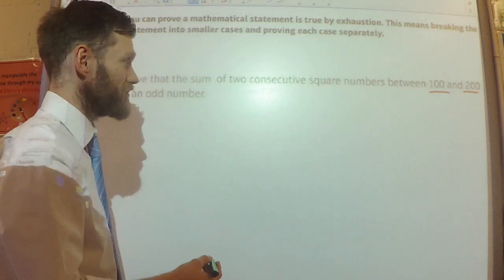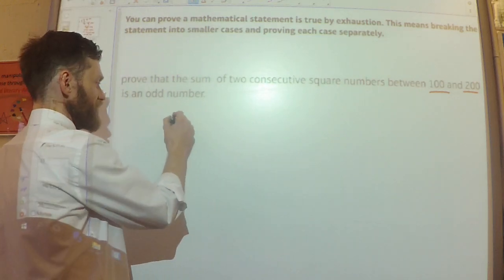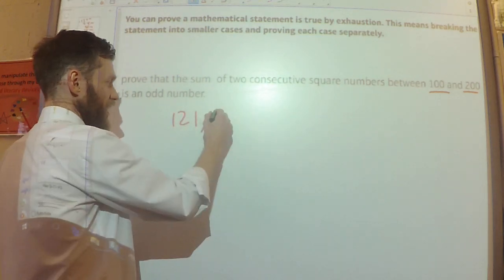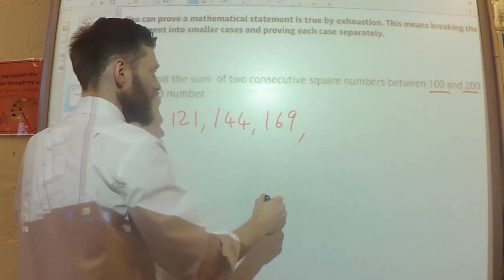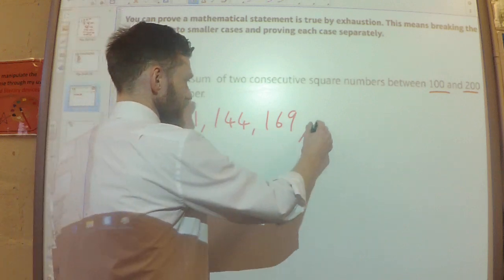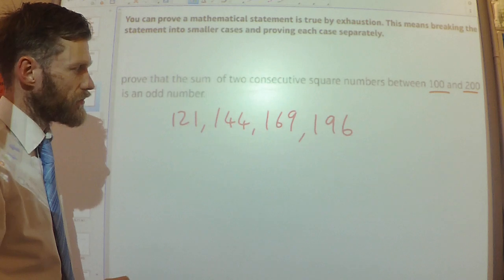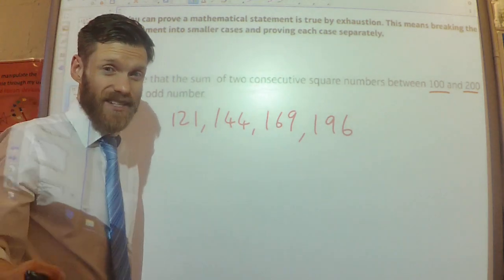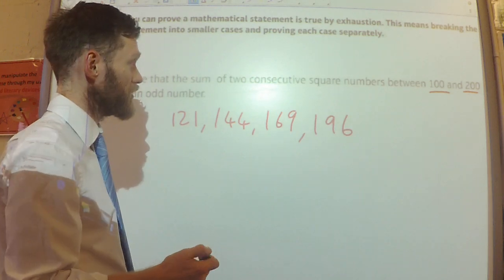In fact, let's just write some of them down. So, we've got 121, we've got 144, we've got 169, and we've got 196. That's it. So, I only actually need to test these four sets of numbers.